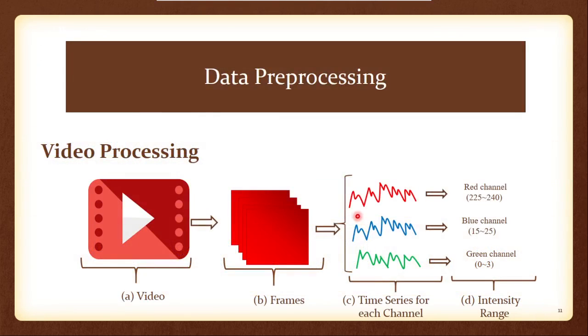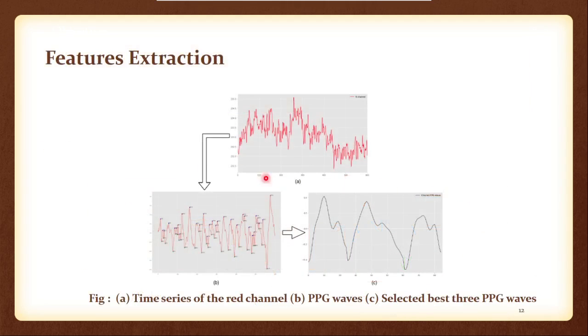So after data collection the next step involves data preprocessing where this is the video that we have collected using our smartphone, then we have extracted around 600 frames from that video. After that we have extracted three time series channels: blue channel, red channel, and green channel, and these are the intensity ranges. And if you notice closely, the red channel has the highest intensity range.